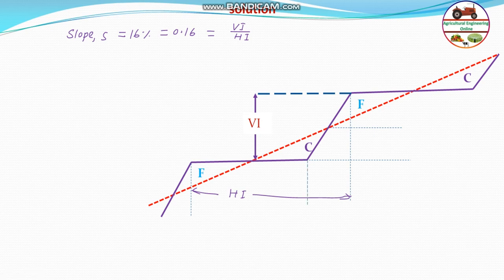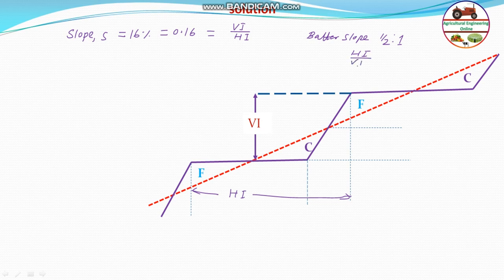Since when the slope is made, there will be a batter slope given. The batter slope in ratio is half to one. Remember, the slope in percentage and slope in ratio are just opposite. In batter slope, this is horizontal by vertical. If it is given in percentage, then it is vertical by horizontal. This is just opposite. So batter slope in this case is half to one.